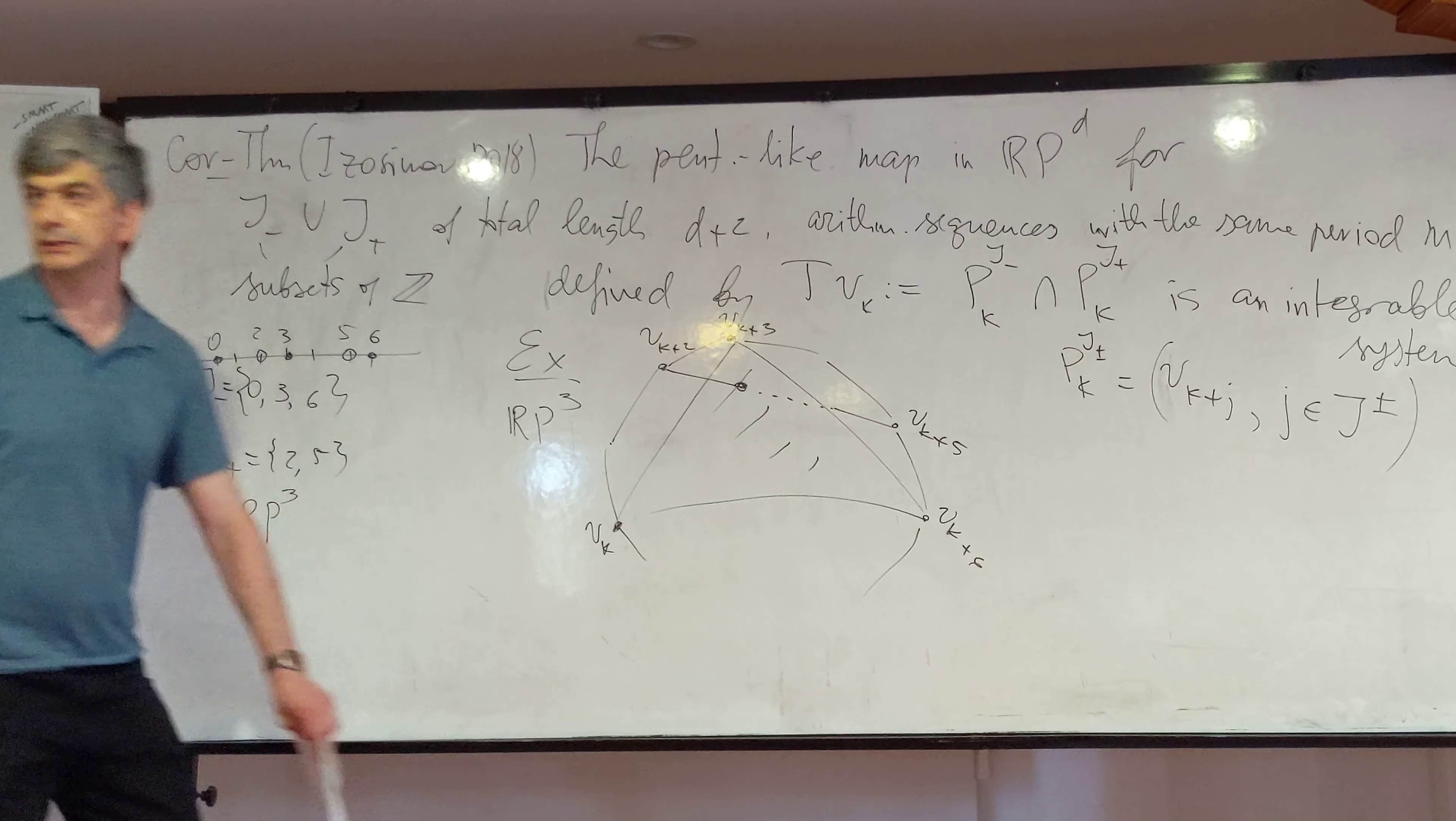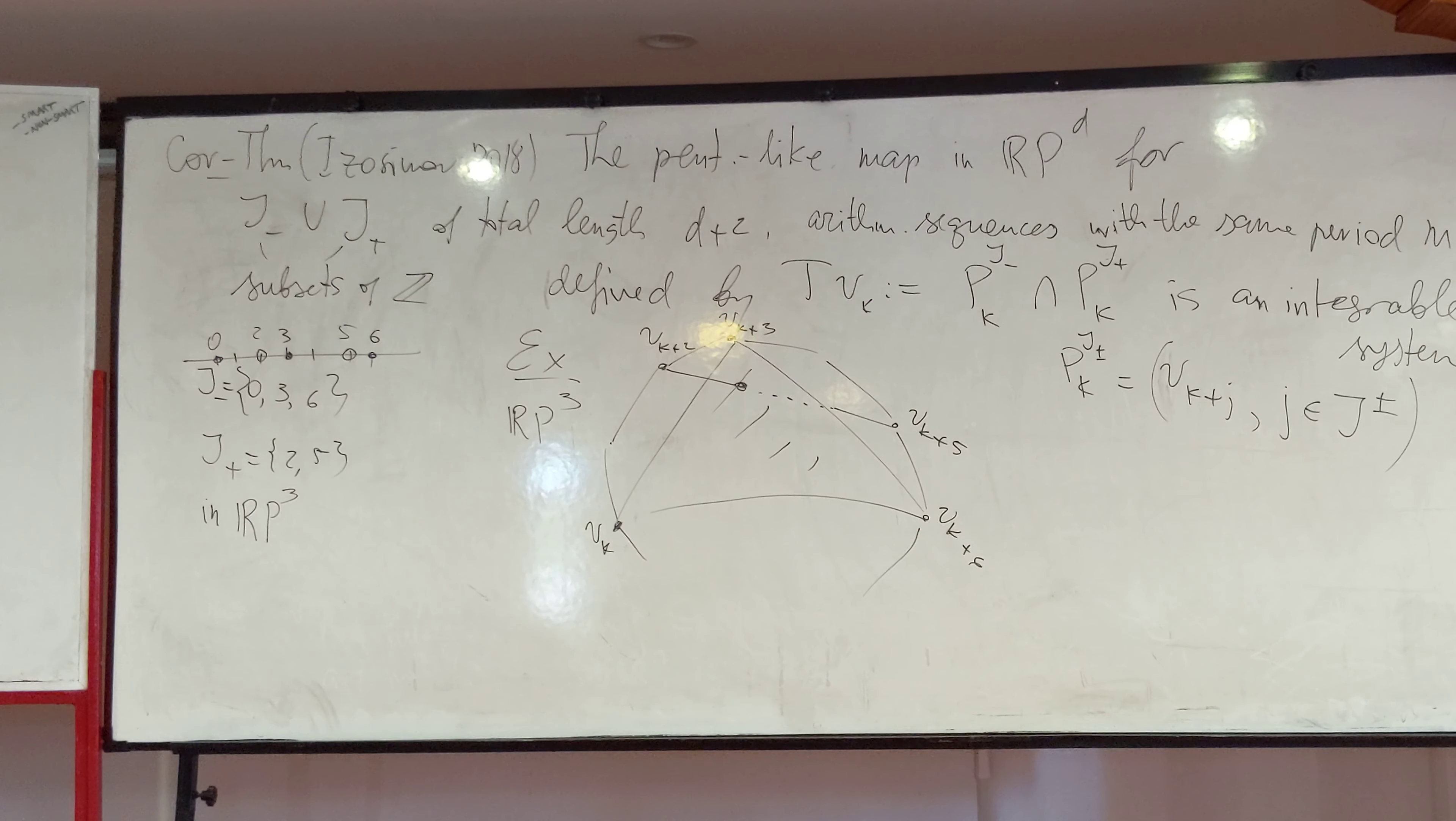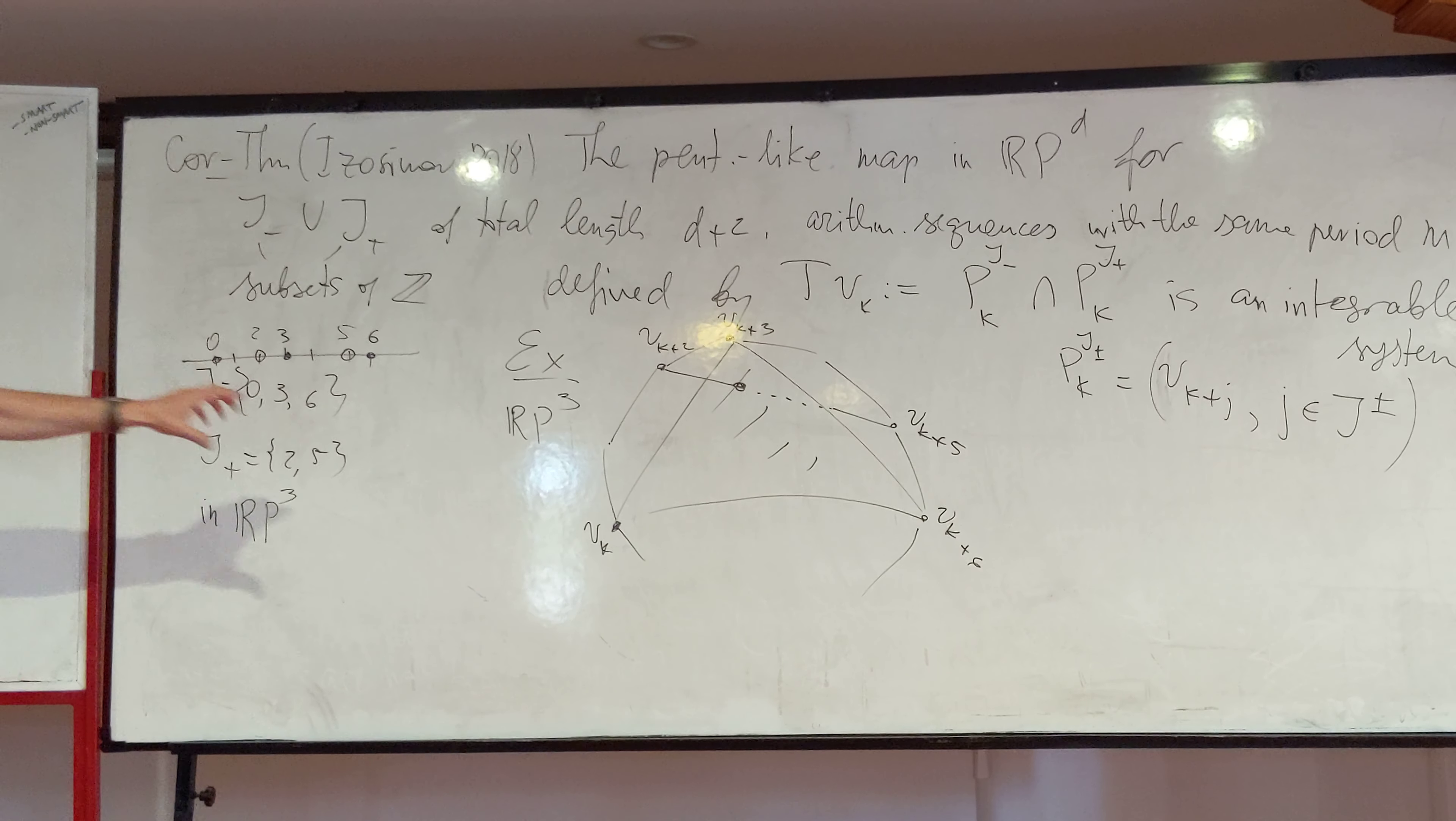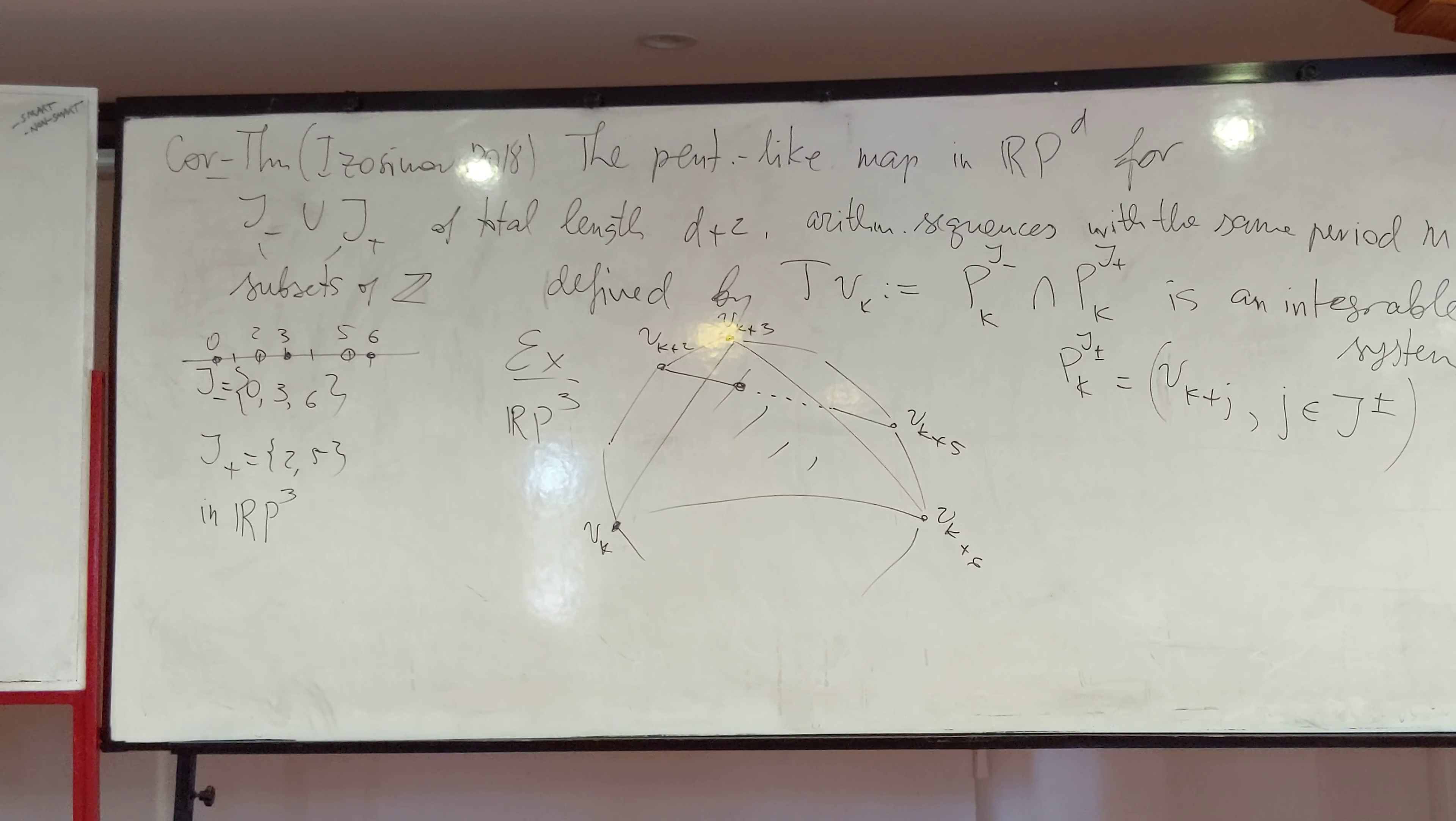So this intersection defines the corresponding pentagram map and it turns out to be an integrable system. It has kind of an anterior intersection as well as I discussed before. For instance, one can take, for just the plane case, one can take just two vertices. This will be one arithmetic progression. The next two vertices is the second arithmetic progression. And it is exactly the original pentagram map.